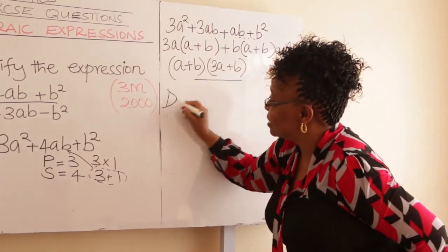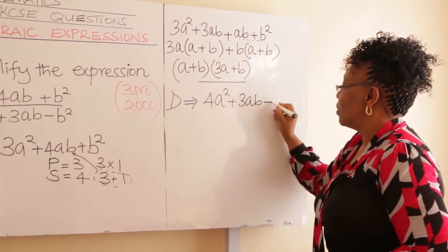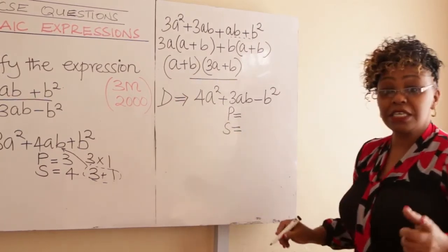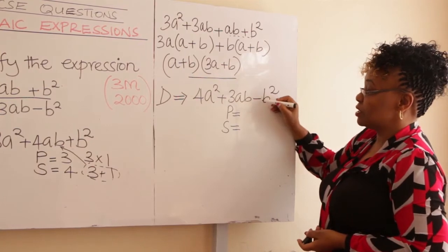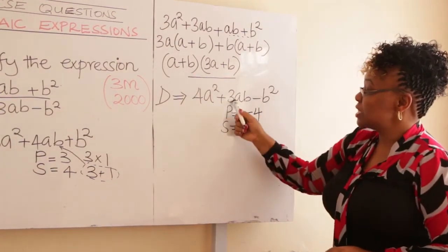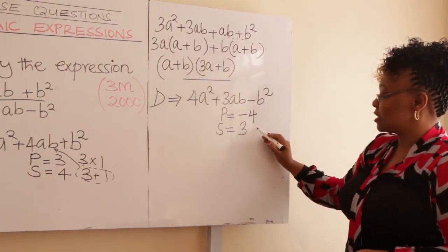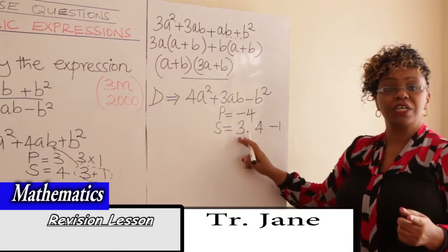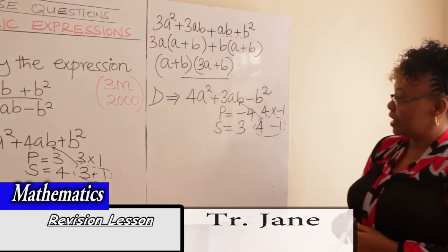Now go to the denominator — label it D — and do the same. The expression is 4a squared minus b squared. The product is 4 times negative 1 equals negative 4 (since the coefficient of the last term is negative 1). The sum is the coefficient of the middle term, which is 0 — but here we look for two numbers that add to get 0 and multiply to get negative 4: those are 4 and negative 1. Substitute these in the middle term.